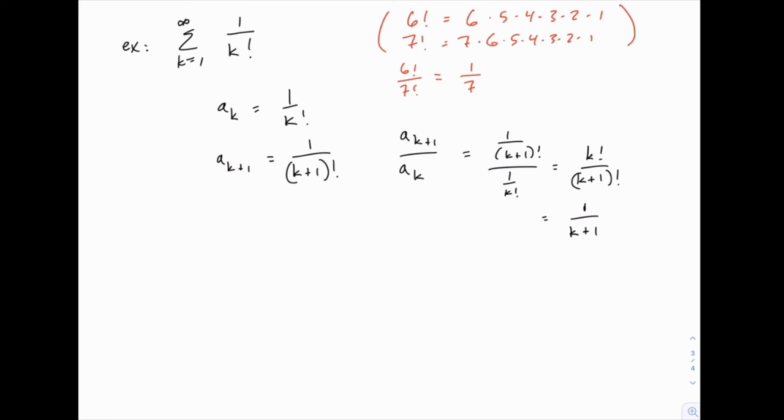So that's one reason that factorials will often pop up when we're doing the ratio test—or more specifically, we'll pick the ratio test when we run into an example with factorials, because this simplification works really nicely.